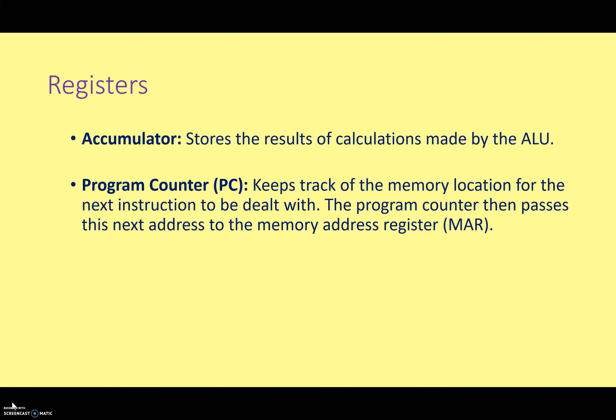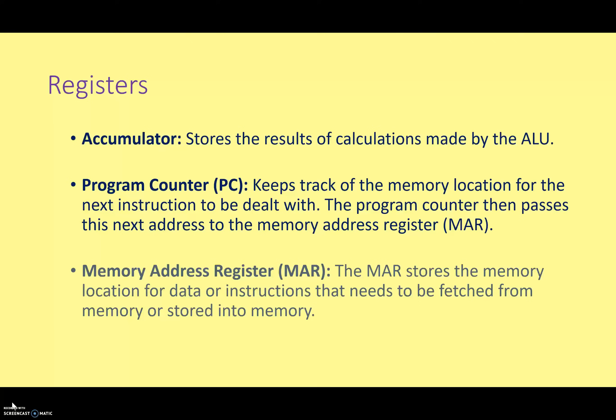Next is the program counter. This keeps track of the memory location for the next instruction to be dealt with by the computer. The program counter then passes this next instruction to what we call the memory address register, or MAR. In the main memory of a computer system — what we call RAM today — all the locations have a very specific unique address, in the same way that your house has a unique address or you have a unique bank account number. The memory address register stores the memory location for data or instructions that need to be fetched from memory, or that are going to be stored into memory.